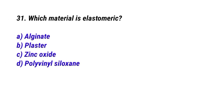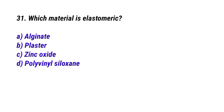Question No. 31: Which material is elastomeric? The right answer is Option D: Polyvinyl siloxane.